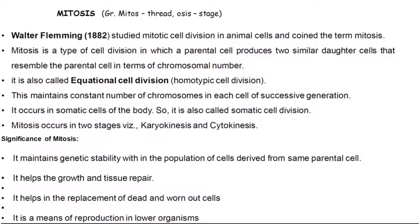The M phase is further divided into mitosis and meiosis. 'Mitos' means thread. Walter Fleming in 1882 studied mitotic cell division in animal cells and coined the term mitosis. Mitosis is a type of division in which a parental cell produces two similar daughter cells that resemble the parental cell in terms of chromosomal number. It is also called equational division or homotypic cell division, and it maintains a constant number of chromosomes in each cell through successive generations.